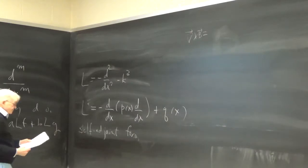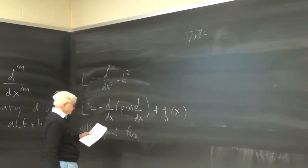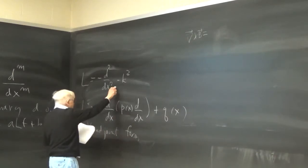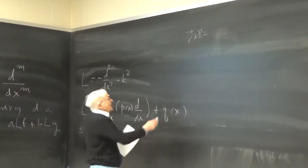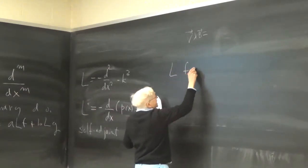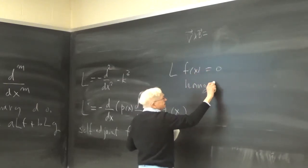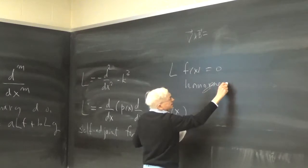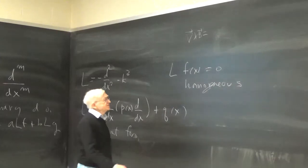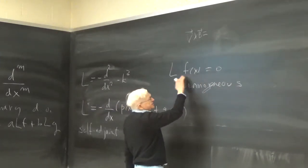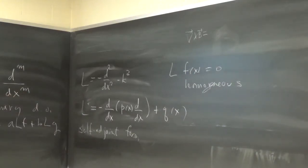If you have an equation of the form L·f(x) equals zero, this is said to be homogeneous, because every term in the equation is proportional to f or one of its derivatives.